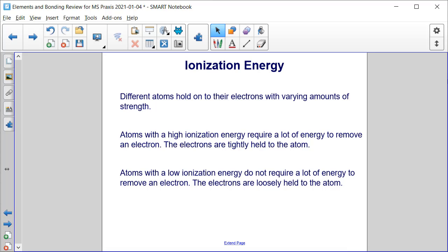Another trend we see in the periodic table is ionization energy. Every element or atom on the periodic table holds onto their electrons with varying amounts of strength.